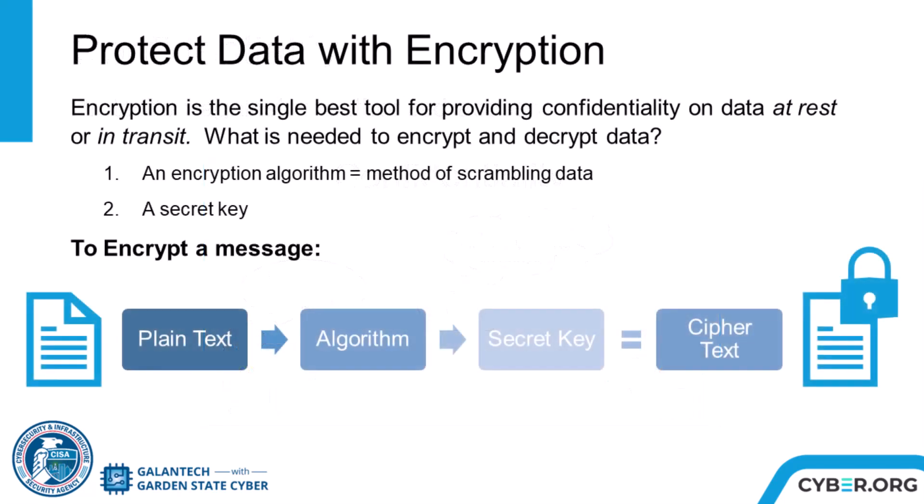Encryption is the single best tool for providing confidentiality on data at rest or in transit. What is needed to encrypt and decrypt data? Encryption requires not only a method of encrypting using an algorithm, but also a secret key. Most people have at least a vague knowledge that these are the two components of encryption.